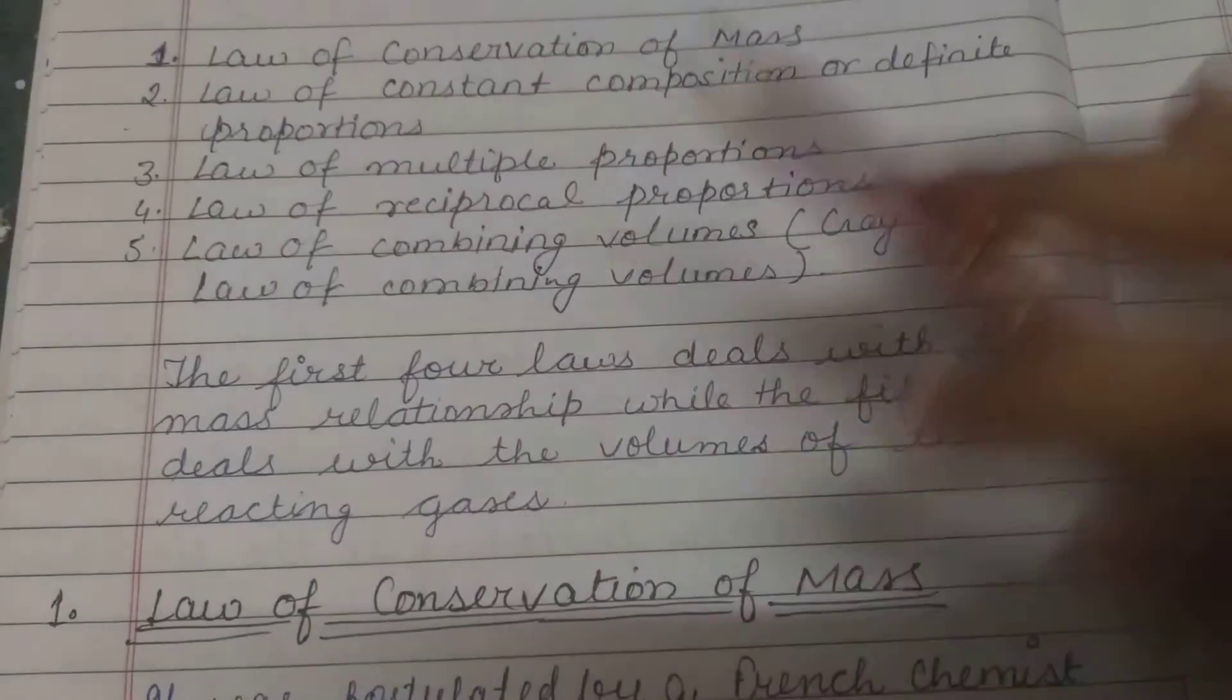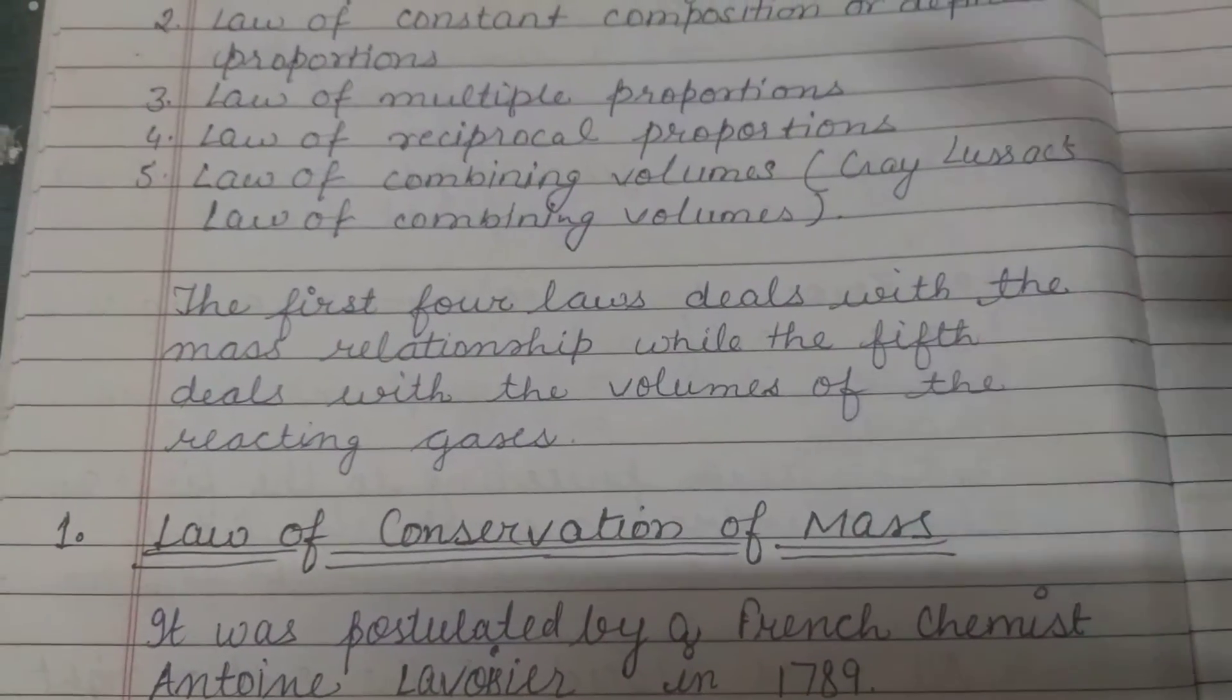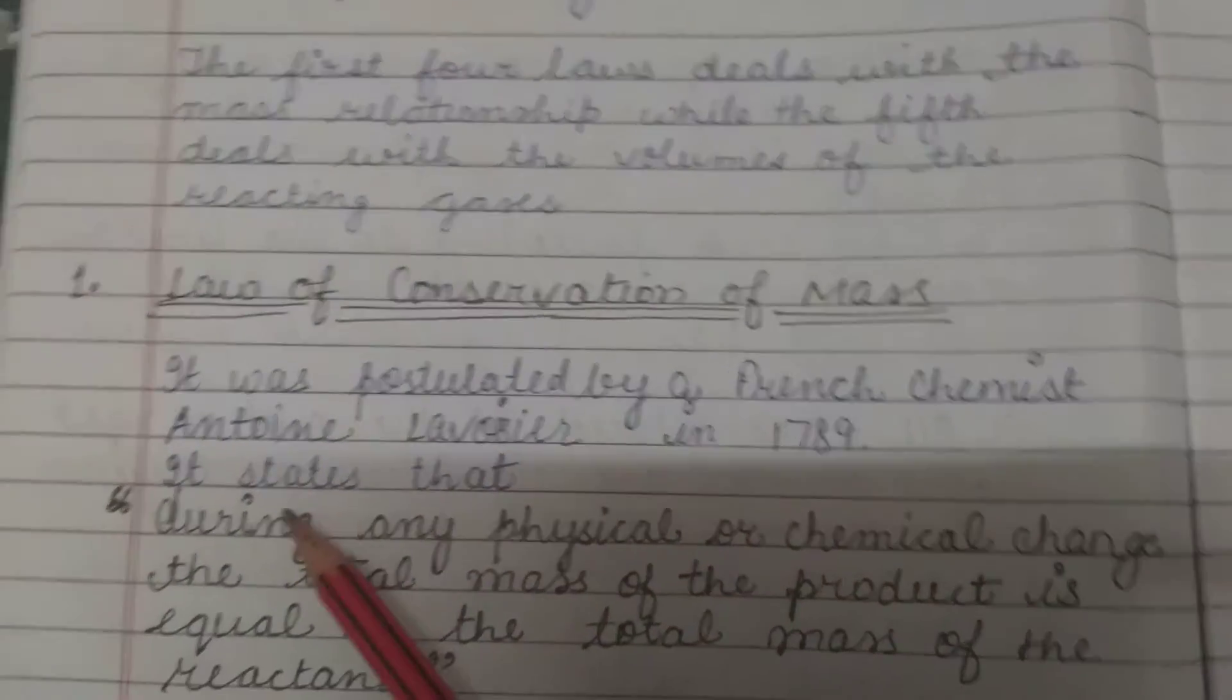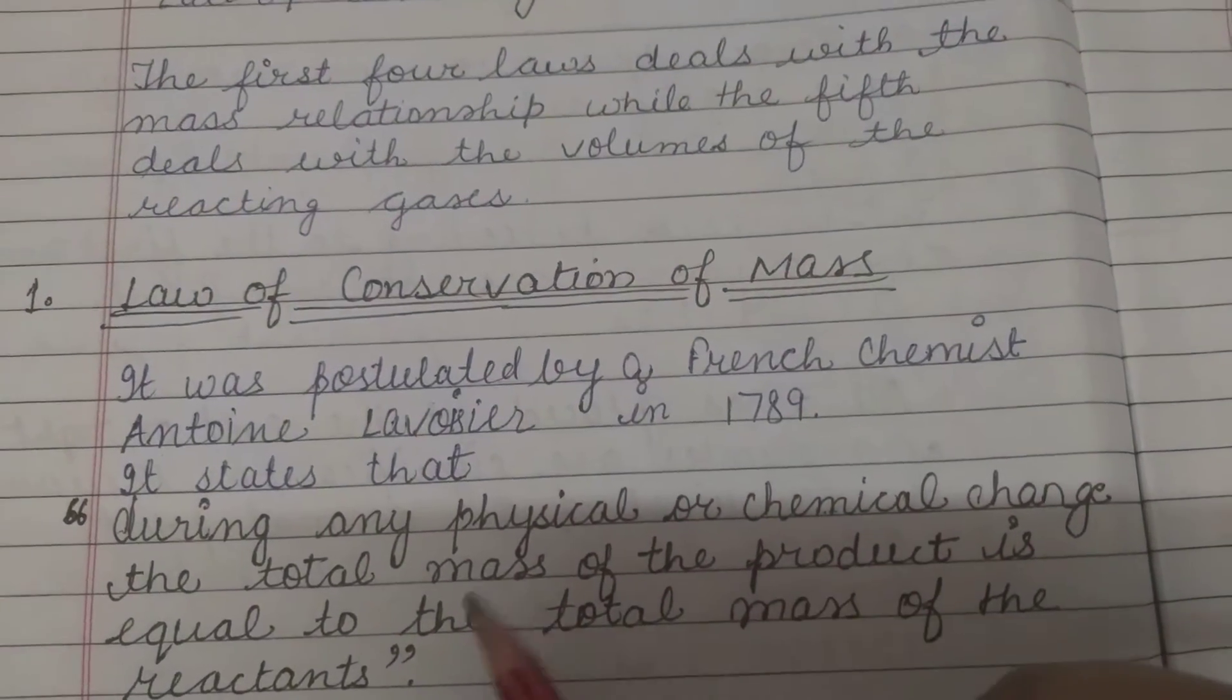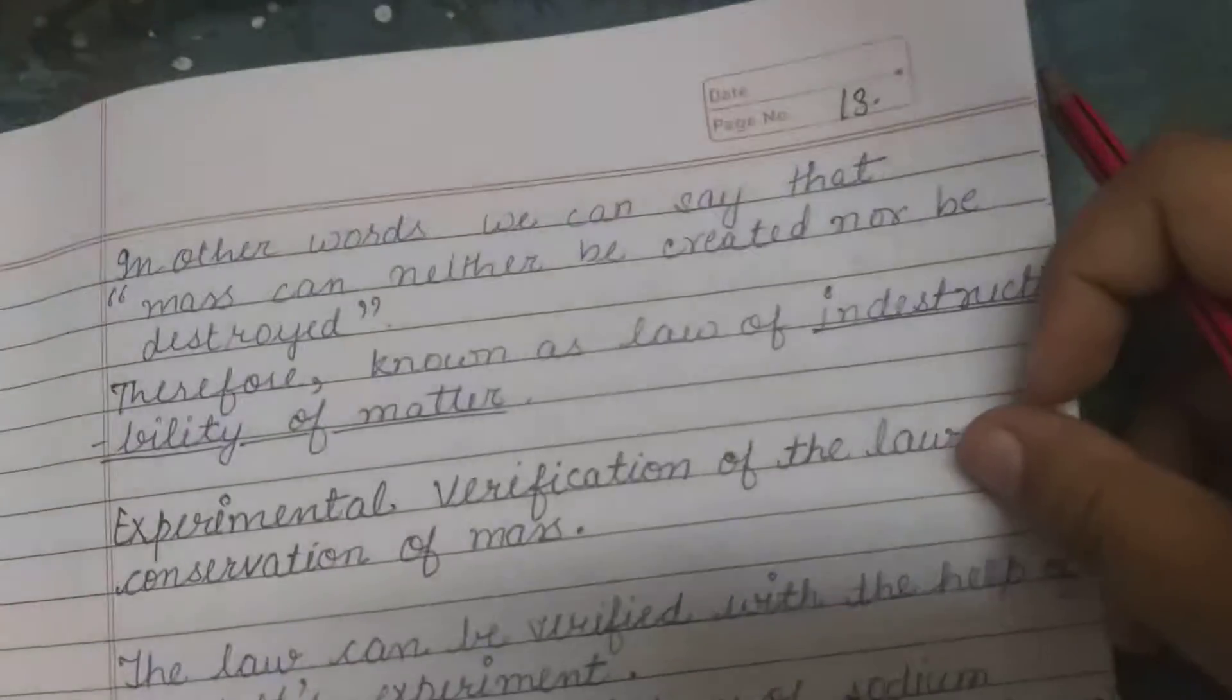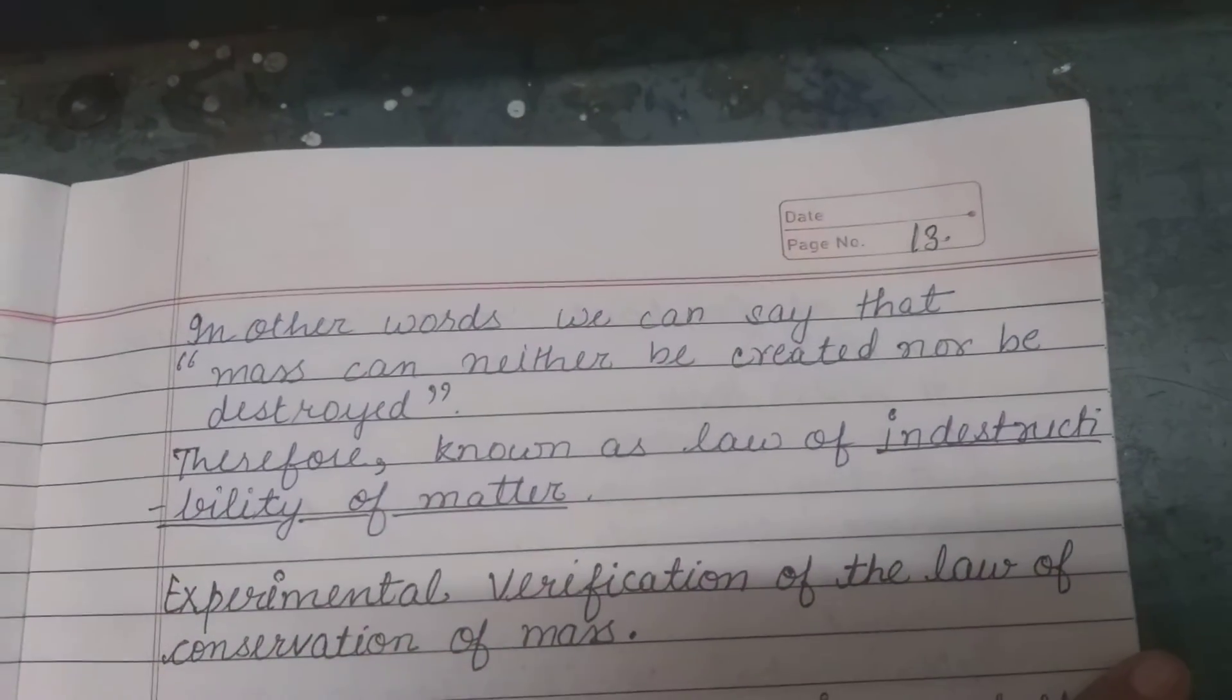Law of conservation of mass: This was postulated by French chemist Antoine Lavoisier in 1789. During any physical or chemical change, total mass of product equals total mass of reactants. In other words, mass can neither be created nor destroyed.